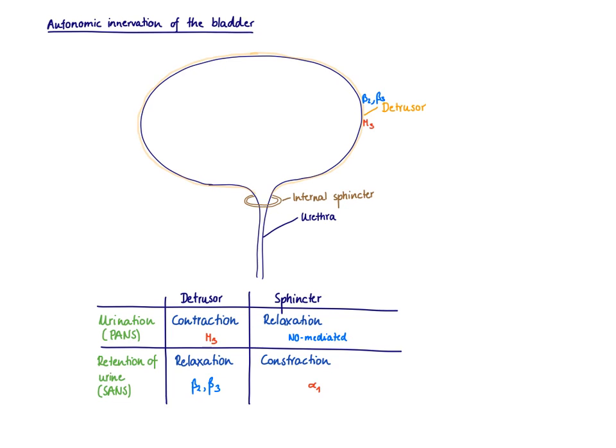Therefore, we can predict as we need to relax the detrusor muscle, this needs to be a beta-2 mediated effect. And in fact, we also find a lot of beta-3 receptors on the detrusor muscle of the bladder.